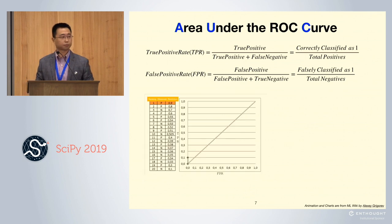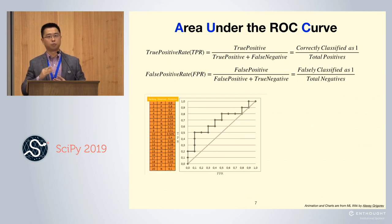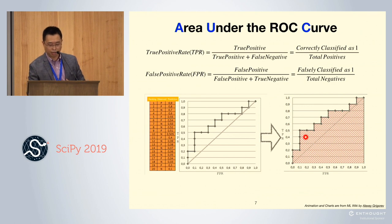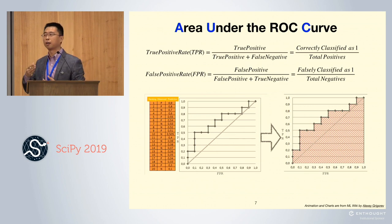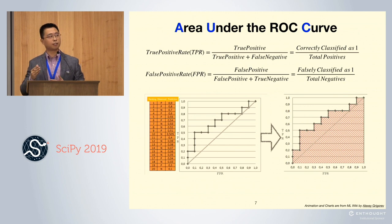Let's take a look at an animation. The left side is a ranked list. Every time when the cursor meets a positive, it moves one step up. If it's a negative, it moves one step to the right. Once we have the ROC curve, the AUC score is simply calculating the area under this curve. If we look back at the whole process, we didn't use the probabilities to calculate our AUC score — the probabilities were only used to rank the list. That means the AUC score doesn't care about the probabilities. It only cares about the ranking.